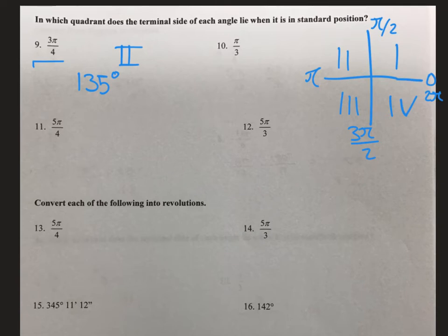Next, let's look at number 12. We have 5π divided by 3. 5 thirds is greater than 1 half. It is greater than 1. It is greater than 3 halves. So that puts us in quadrant 4.